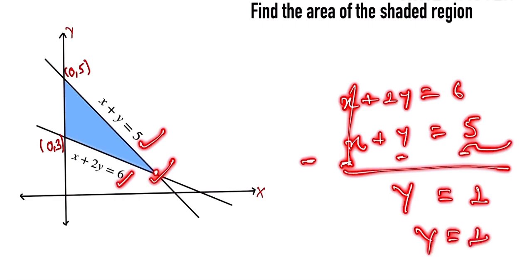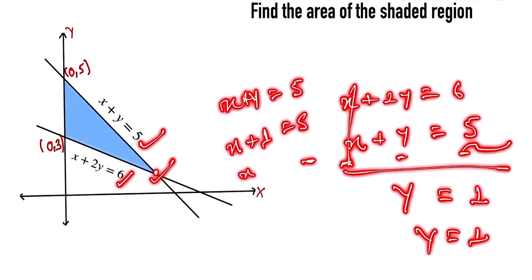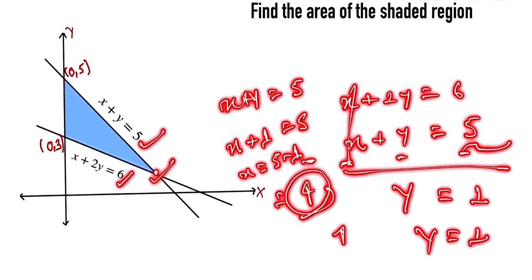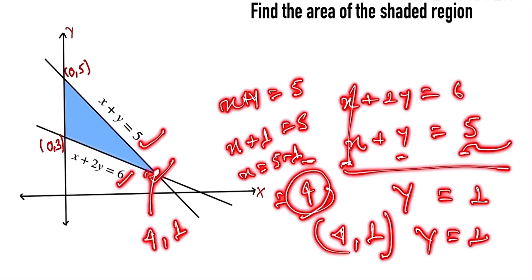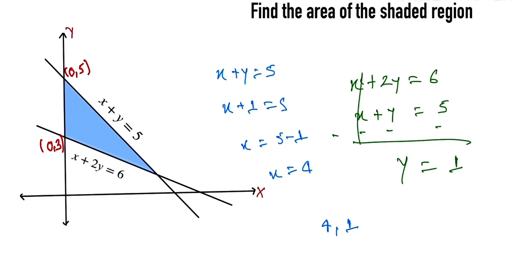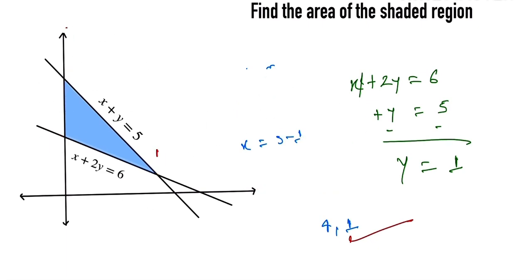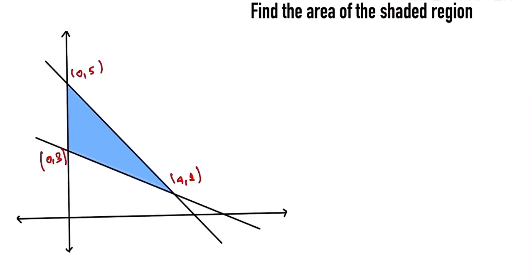Now we find the value of x by substituting y equal to 1 into x plus y is equal to 5, giving x equal to 5 minus 1, which is 4. So this coordinate is (4, 1). We have now found all three vertices of the triangle.